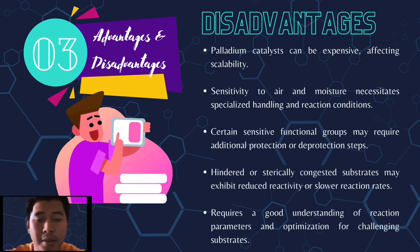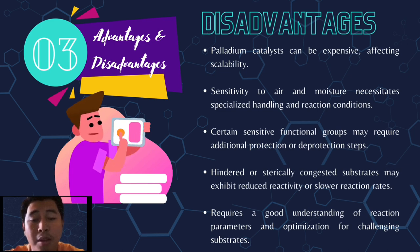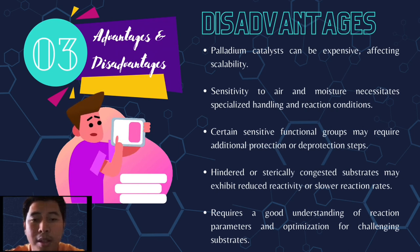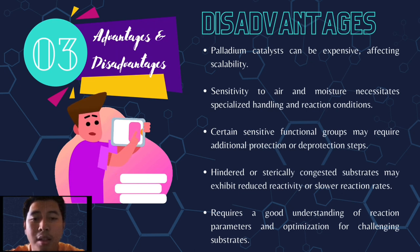There are also disadvantages of the Buchwald-Hartwig reaction, such as palladium catalysts being expensive and affecting scalability, sensitivity to air and moisture necessitating specialized handling and reaction conditions, certain sensitive functional groups requiring additional protection or deprotection steps, and hindered or sterically congested substrates exhibiting reduced reactivity or slower reaction rates.